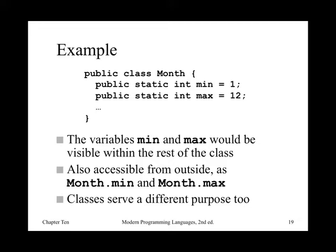Here's an example where I've got a class called month. It's public, I've got a couple of variables interior — internal — min and max. They're also public static ints. I can see min and max visible within the rest of the class, but also from outside. But from outside, I then have to say month.min, month.max. That's just to reiterate this idea that you've seen this before in the context of object-oriented programming.